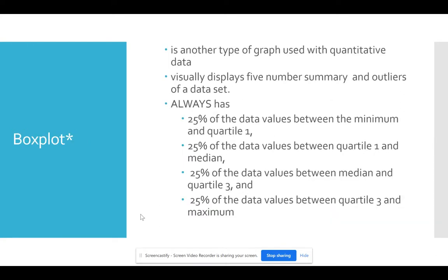A third quantitative graph is a box plot. A box plot usually displays the five-number summary and the outliers of a data set. And it always has 25% of the data values between the minimum and a quartile.